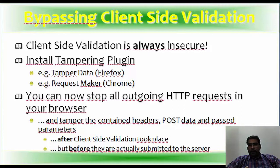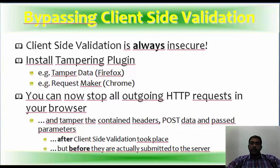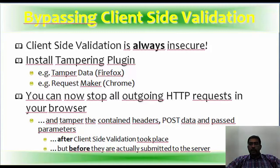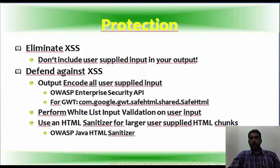Once you enter username and password, after client-side validation happens, install an add-on like Tamper Data, trap that request, and you can see the actual username entered, alter it, see the password in plain text if not encrypted, and find what kind of encryption is used if it is encoded. The most popular tools are Tamper Data, Request Maker, and Burp Suite — install Burp as a proxy on port 8008 to do the same thing.